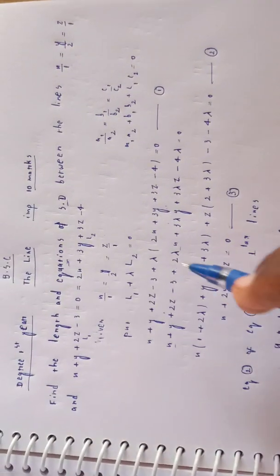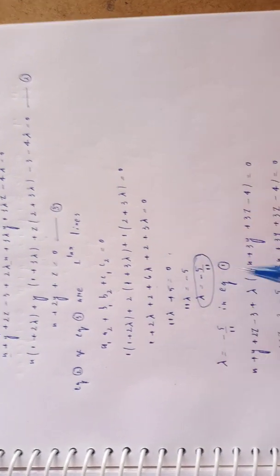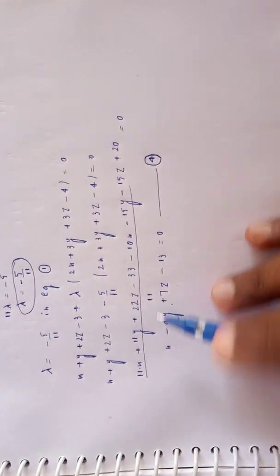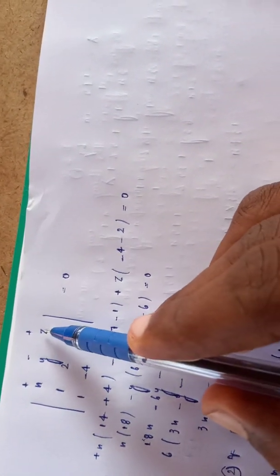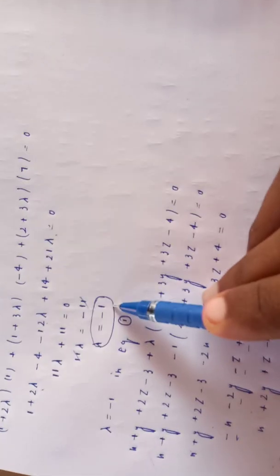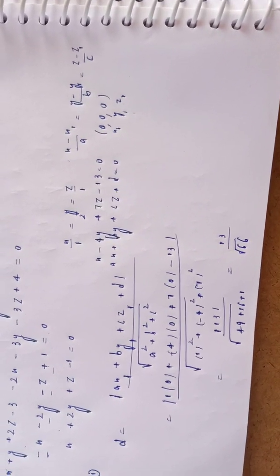To summarize: we used the L1+λL2=0 family of planes method. By applying the perpendicularity condition a1a2+b1b2+c1c2=0, we found λ values giving the two planes whose intersection is the SD line. The shorter distance formula with x1,y1,z1 gives the answer. Please like and comment on the channel.